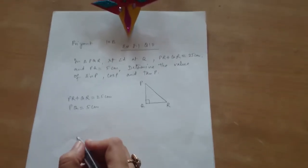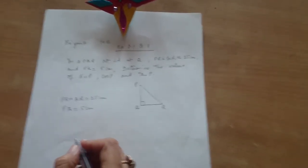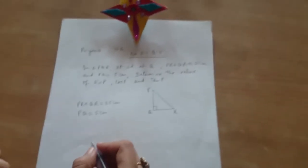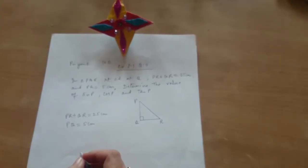Priyank, read the question. In triangle PQR, right angle at Q, PR plus QR equals 25 cm and PQ equals 5 cm. Determine the value of sin P, cos P, and tan P.